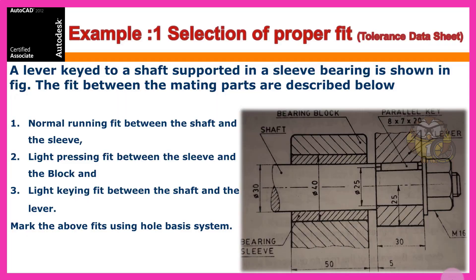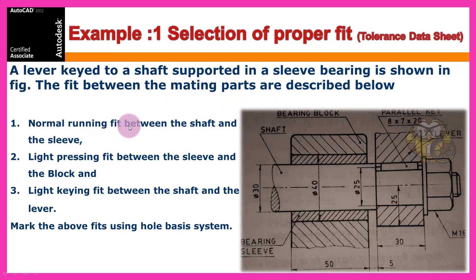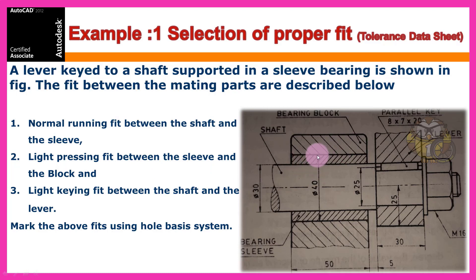First example: how is the assembly assembled? The assembly function involves a lever keyed to a shaft supported in a sleeve bearing as shown in the figure. The fits between mating parts are described: first, a normal running fit between the shaft and the sleeve, with shaft diameter 40mm. Second, a light keying fit between the shaft and the lever.